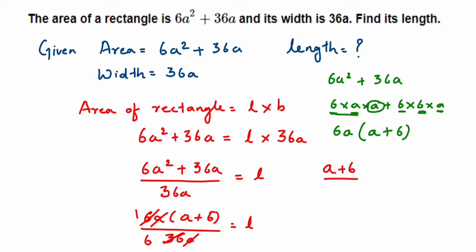So here we got (a + 6) / 6 is equal to L. Again, we cannot cancel this 6 and this 6, because this 6 is in addition with a. If it was in multiplication, we could have cancelled this. So this is the answer here.